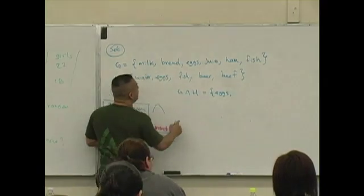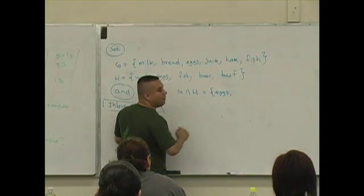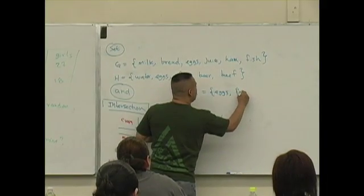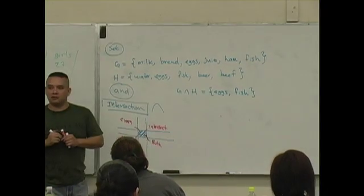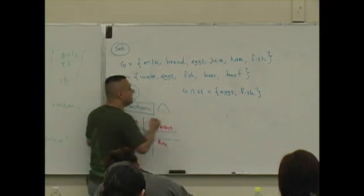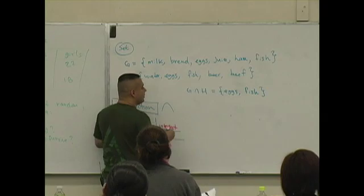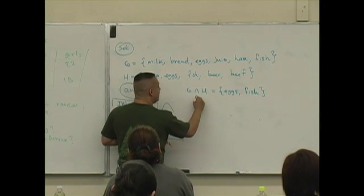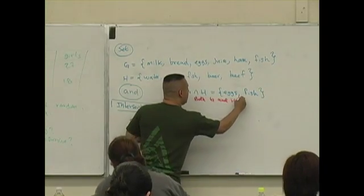Intersection. Juice in both? No. Ham? No. Fish? Fish. Is that the only thing that's in the intersection? Okay, so notice this list. This is a list of items that's in what? Both G and H.